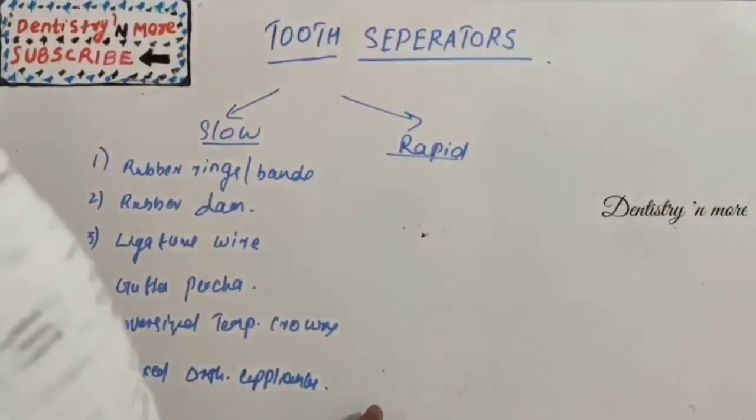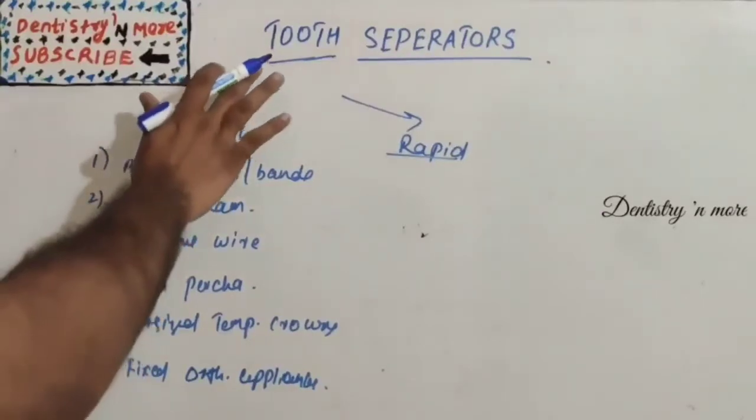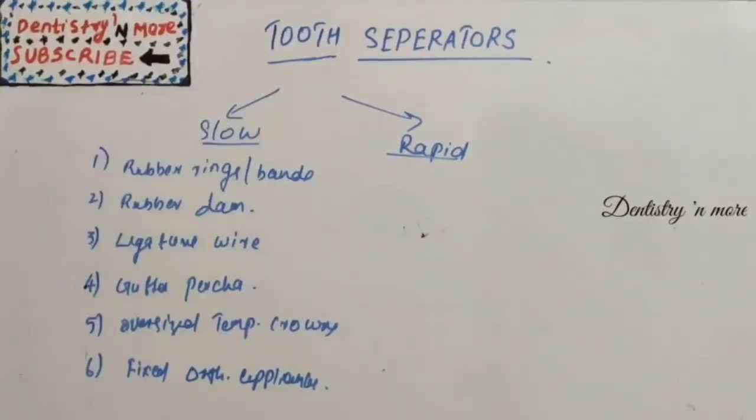Hello everyone, welcome back to another session in Dentistry and More. Today's topic in conservative dentistry is tooth separators. Separation of teeth may be necessary to improve the convenience form of the dentist or to prevent damage to teeth and supporting tissues, and also to achieve functional contacts, contours, and occlusion during restorations.